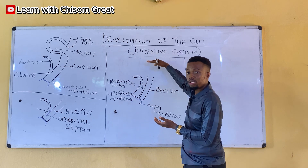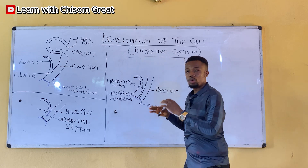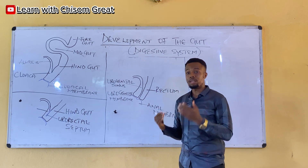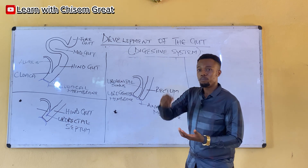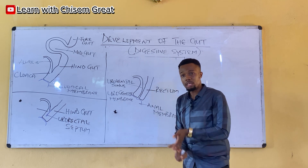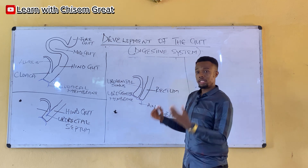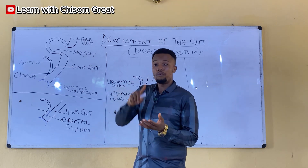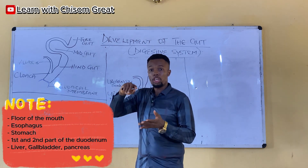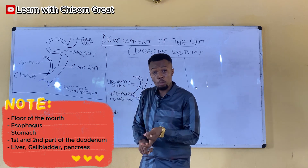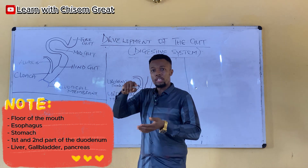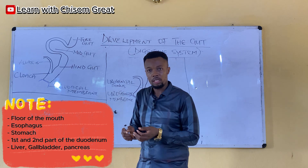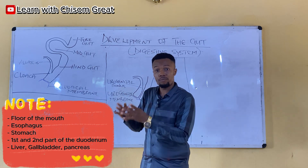The anal membrane, together with the anal pit here — the proctodeum gave rise to the anal pit — gave rise to the anal canal. The dorsal part of the cloaca gave rise to the rectum, and the ventral part gave rise to the urogenital system. Above is still the hindgut. Now, the foregut gave rise to the floor of the mouth, the esophagus, the stomach, the respiratory system, the first and second part of the duodenum, the liver and gallbladder, and also the pancreas.